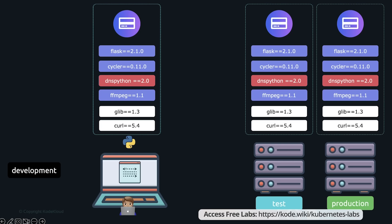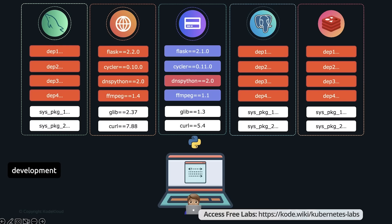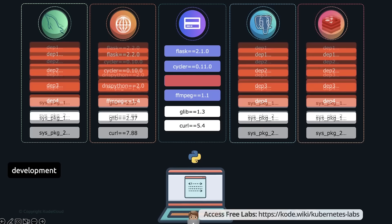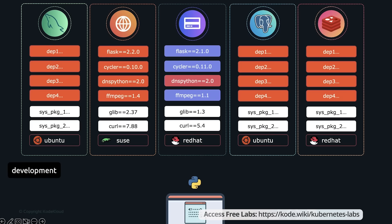That's what containers can help us with. Containers help us create isolated environments on our systems to run applications completely isolated from each other. You could run different web applications with different versions of dependencies, a PostgreSQL server, a MySQL server, or a Redis server — all on the same system with their own libraries and dependencies, without worrying about any impact to each other. Each of these may be based on different operating systems too.